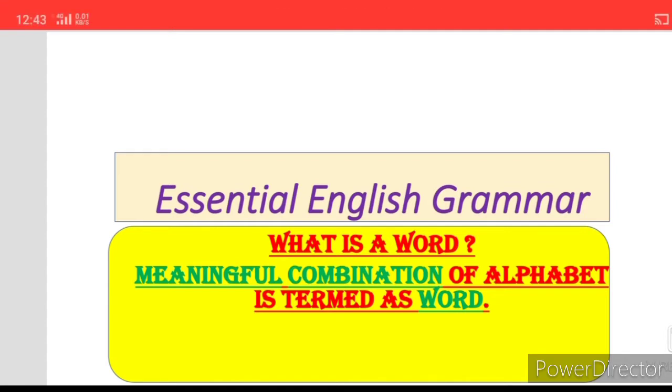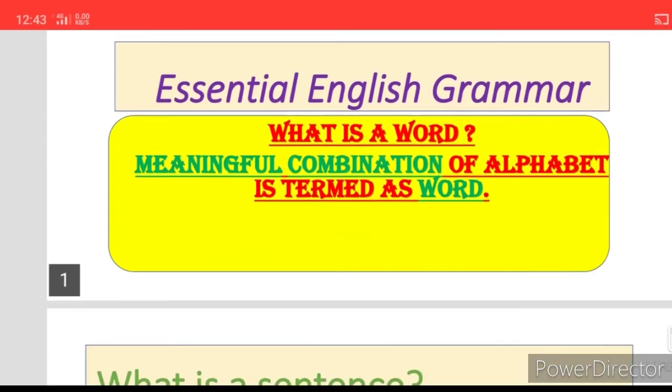What is a word? Meaningful combination of alphabet is termed as word. Alphabet, i.e. Harf ka ba-maani-majmah aek-lovez hota hai.